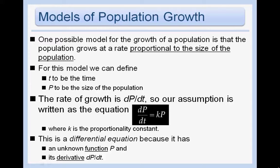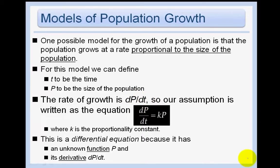For this model, we define t to be the time and p to be the size of the population, meaning that the rate of growth, or dp/dt, the rate of change of the population with respect to time, is given by the equation dp/dt equals kp. We say the population is growing at a rate proportional to the initial population, where k is a proportionality constant. This is a differential equation because it has an unknown function p and its derivative dp/dt.